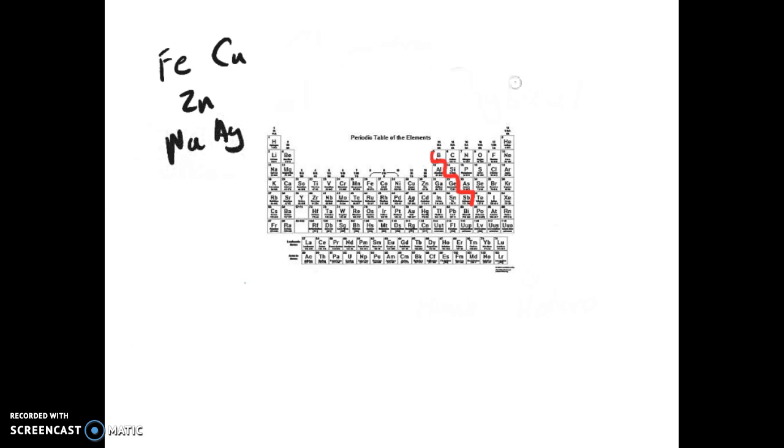On the other side, we have nonmetals. They're dull, brittle, and they're also not very good conductors of heat or electricity. This includes other familiar elements like carbon, oxygen, sulfur, chlorine, or phosphorus, and they're on this side of the table.